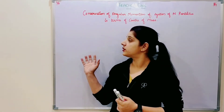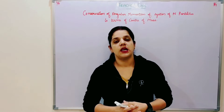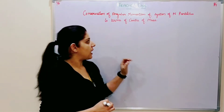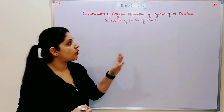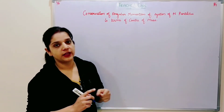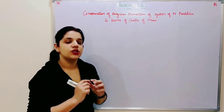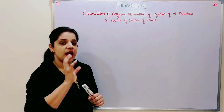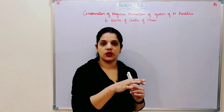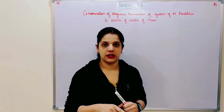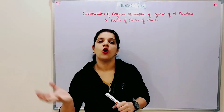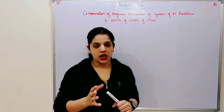Today we will be doing one of the last topics of our first unit, completing the first unit of our syllabus for BSc first year. This is the conservation of angular momentum of a system of n particles. We will conserve the angular momentum in terms of the center of mass, and we will write the expression for the center of mass.